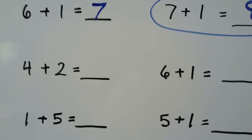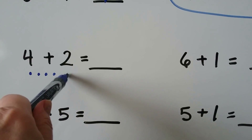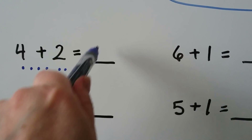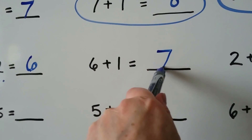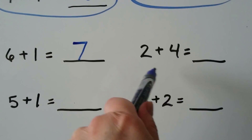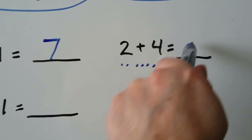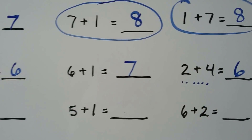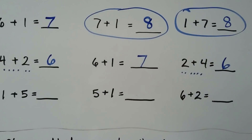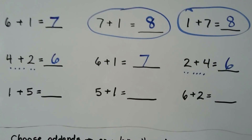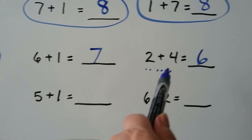What is 4 plus 2? 4 and 2 more is 6. 4 plus 2 is 6. 6 and 1 more, that's 7. 2 plus 4 is 6. Which two addition sentences in this row have addends in different orders? If you said this one and this one, you're right.